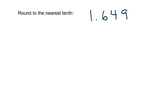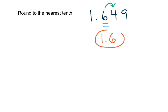Our next example is round to the nearest tenth: 1.649. The first thing you have to do is find the tenths place — that's where the six is, so that's going to be the last digit in our answer. To decide whether we round up or down, we look one space to the right. That's a four, and four or lower means we round down. So when I round this to the nearest tenth, it's going to be 1.6.